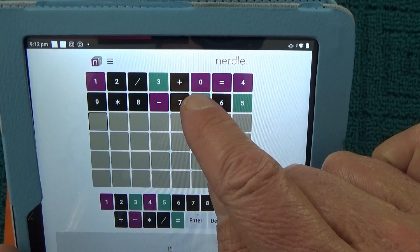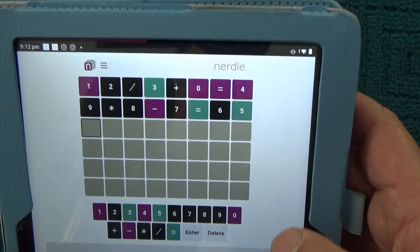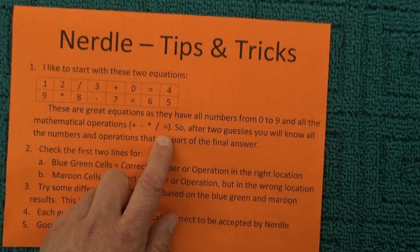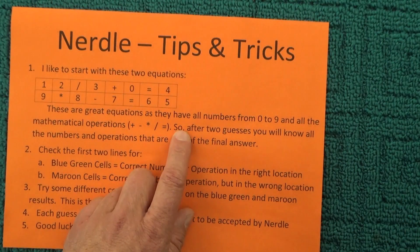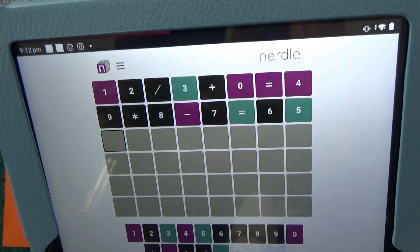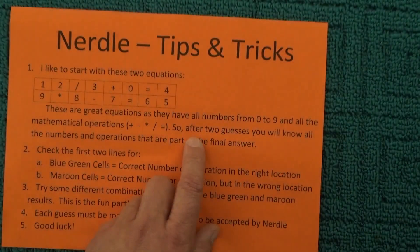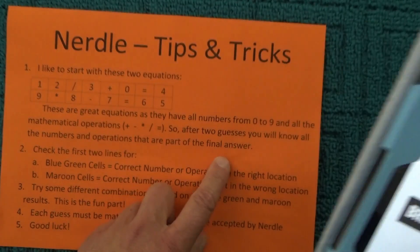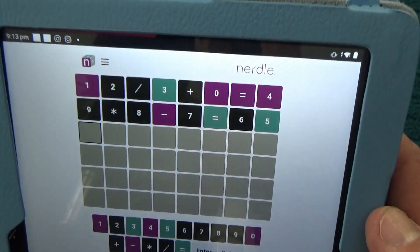this is where you've got the correct number or operation, but in the wrong location. So you can see there the 1, minus, 0, equals, and 4 are going to feature in the answer, but they're just in the wrong location. So using those first two equations,